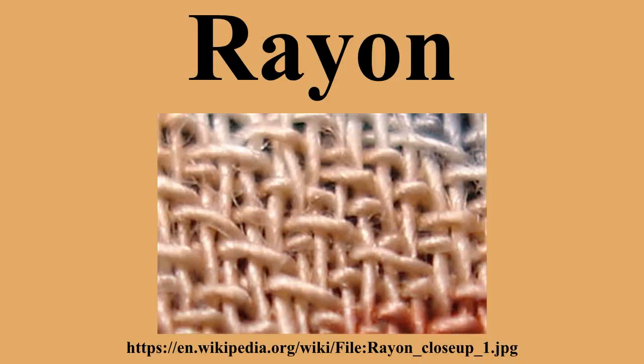Regular rayon has lengthwise lines called striations and its cross-section is an indented circular shape. The cross-sections of HWM and Cupra rayon are rounder. Filament rayon yarns vary from 80 to 980 filaments per yarn and vary in size from 40 to 5,000 denier. Staple fibers range from 1.5 to 15 denier and are mechanically or chemically crimped. Rayon fibers are naturally very bright, but the addition of delustering pigments cuts down on this natural brightness.